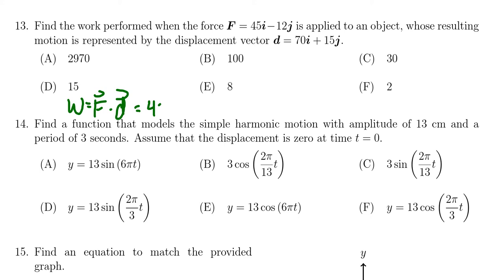This would be 45 times 70 minus 12 times 15. With a little bit of arithmetic, we can see that 45 times 70 is 3,150, and then 12 times 15 is equal to 180. And when you take the difference there, you get 2,970, so the correct choice will be option A.